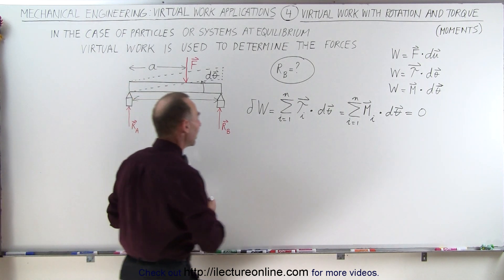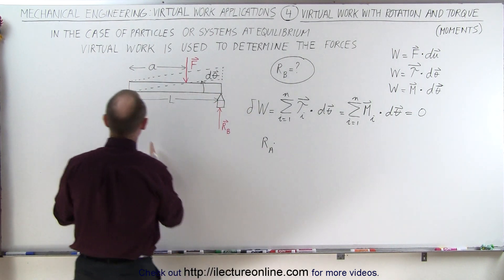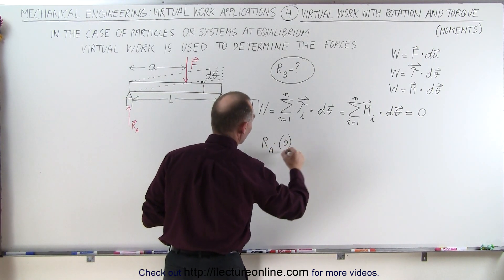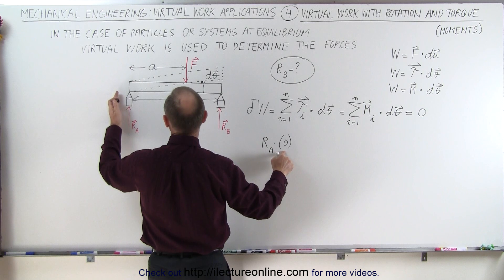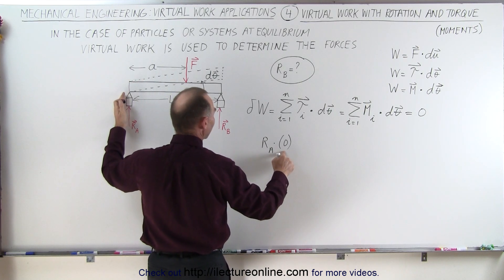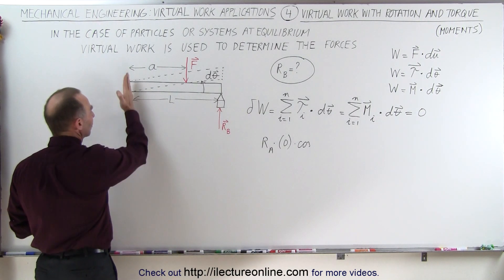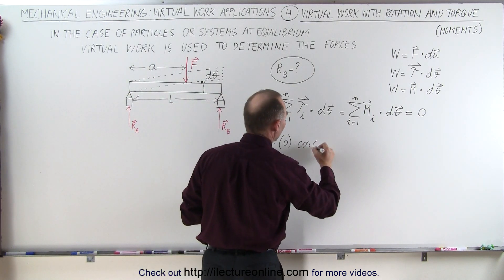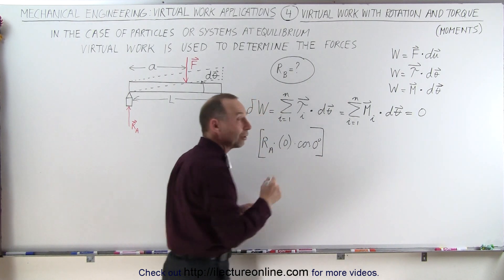Starting with the reactionary force at A: the force at A times the perpendicular distance from the point of rotation to where the force is acting — in this case that's going to be equal to zero. So this term is zero, because the force times the perpendicular distance times the cosine of the angle between the two equals zero. The reactionary force is upward and d-theta is upward, so that's the cosine of zero degrees — but this term is still zero because of where the force is acting.